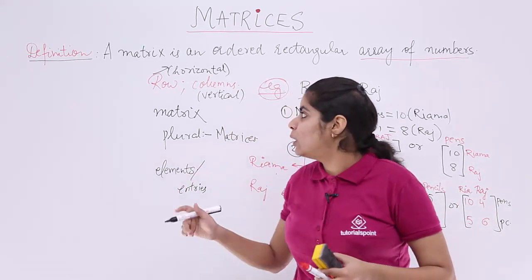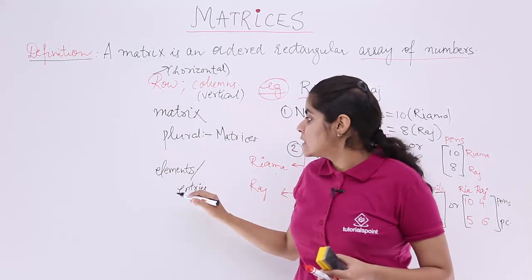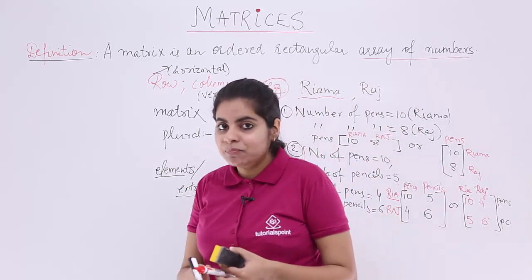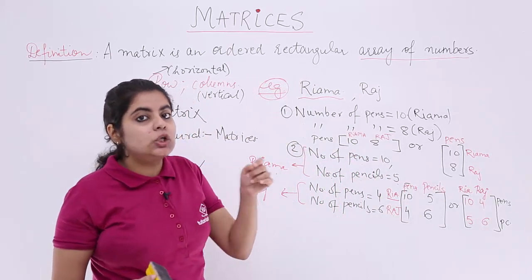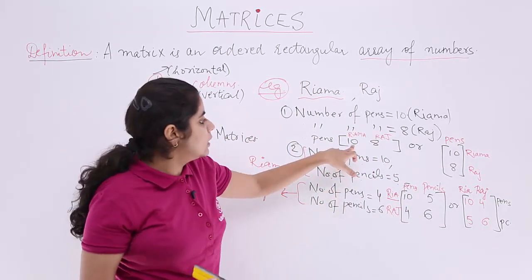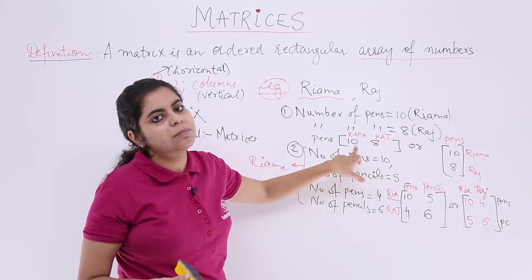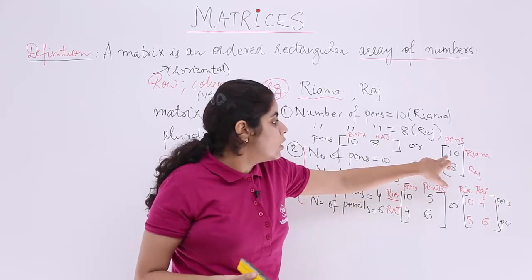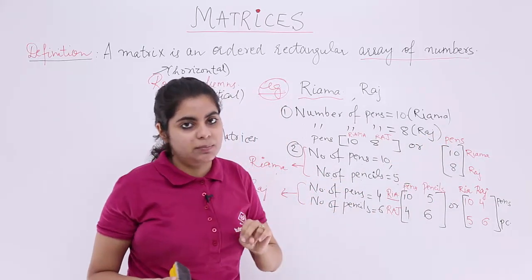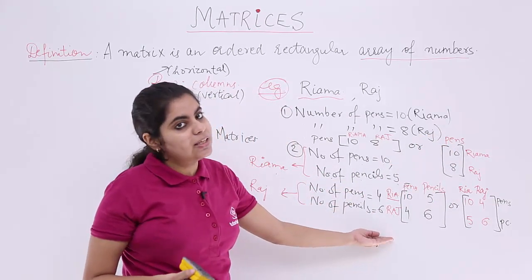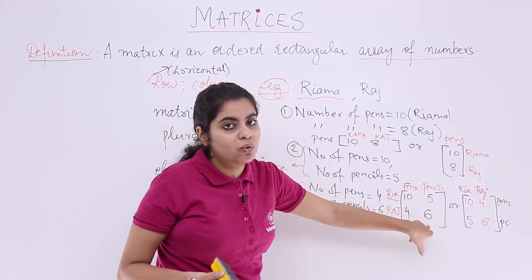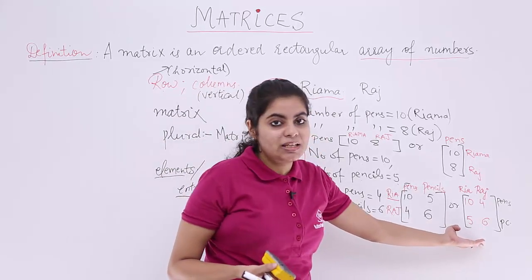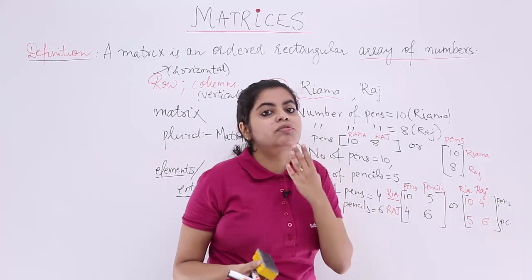So till now we have studied rows, columns, and elements. Elements and entries — let's count how many elements are in each example. First case: 10 and 8 — two elements. Second case: 10 and 8 — two elements. Third case: 10, 5, 4, 6 — four elements. Last case: 10, 4, 5, 6 — four elements.